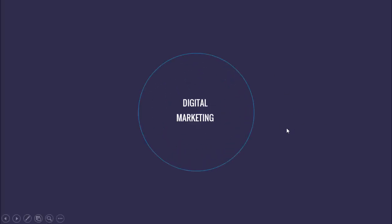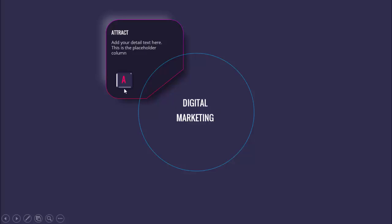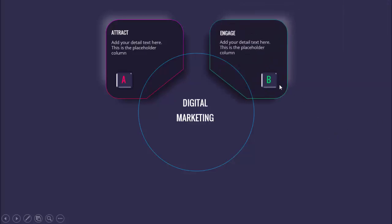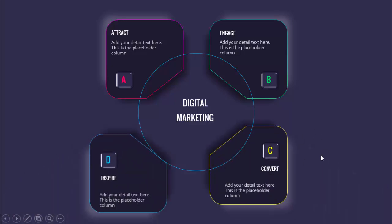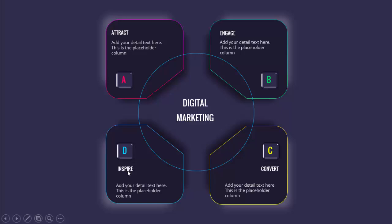I have added the title at the center of the slide, and when I click, a circle will come and then the first point which is point A 'Attract'. I've given some bright colors at the borders and a light effect at the background, with a shadow effect on the side. On the next click it will come option B 'Engage', then option C 'Convert', and then option D 'Inspired'.